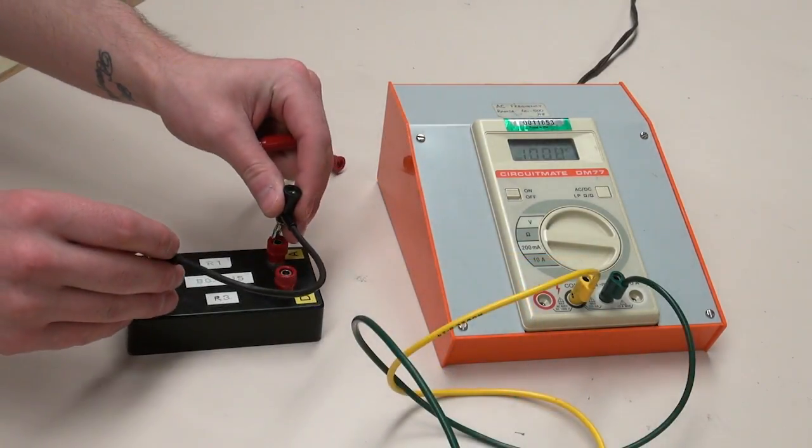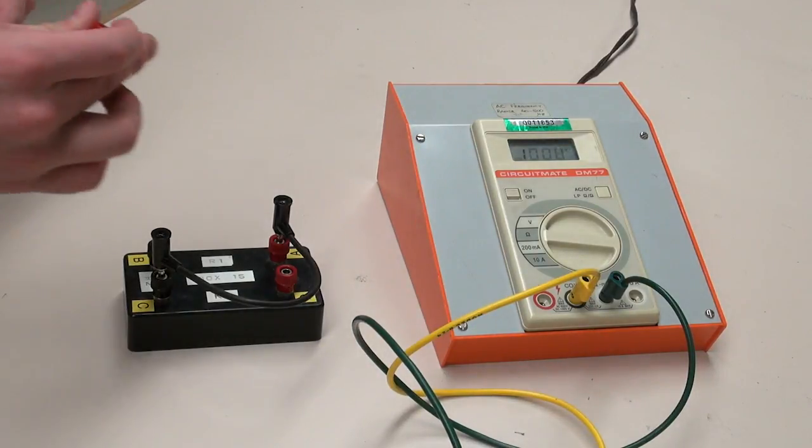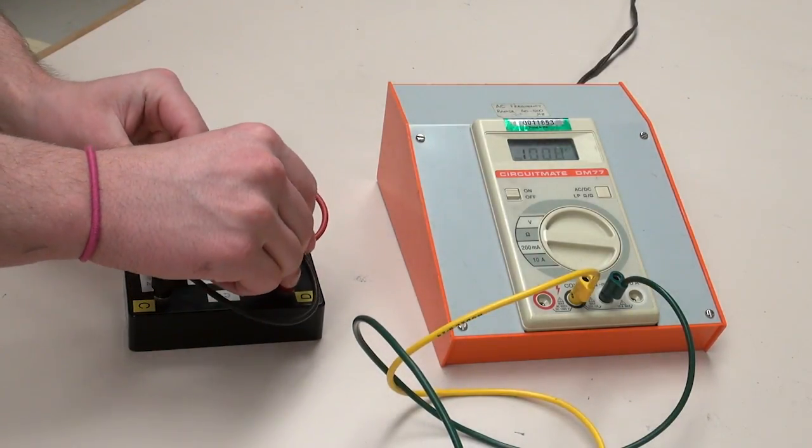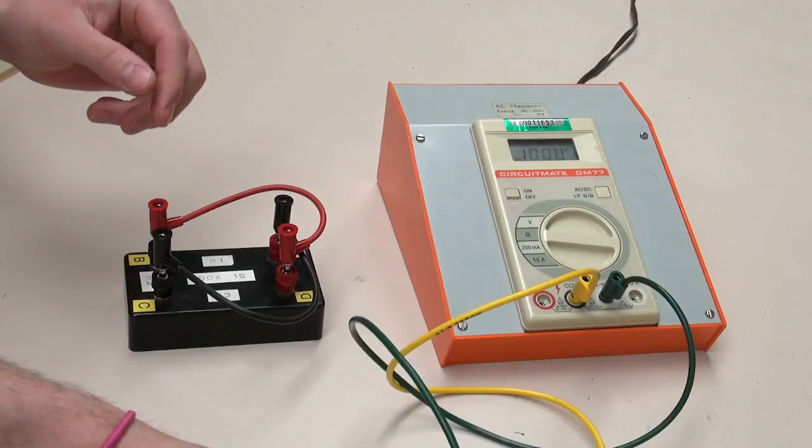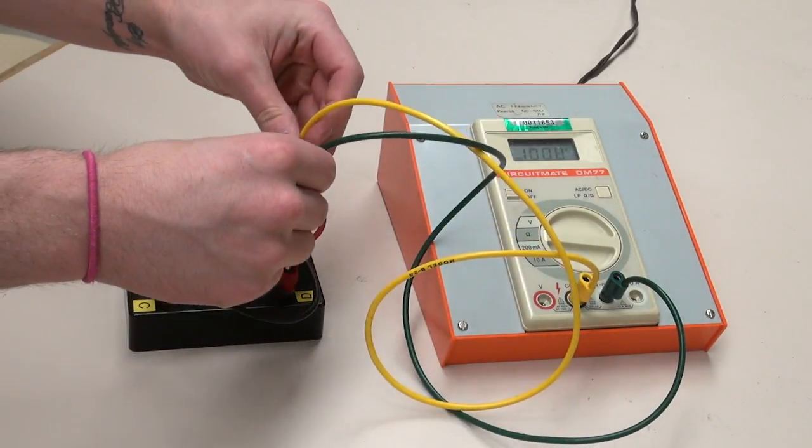The resistors in your black box can be connected in parallel by connecting a jumper lead from A to C, a jumper lead from B to D, and measuring the resistance between points A and D.